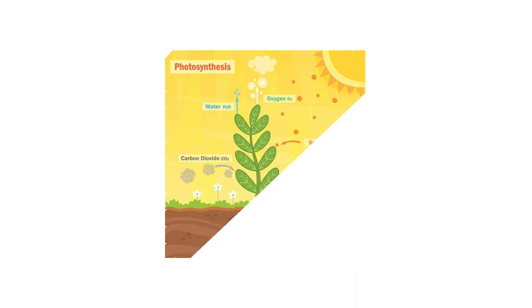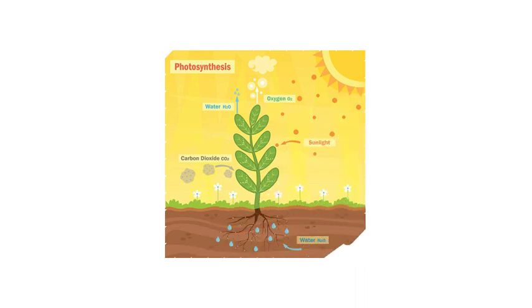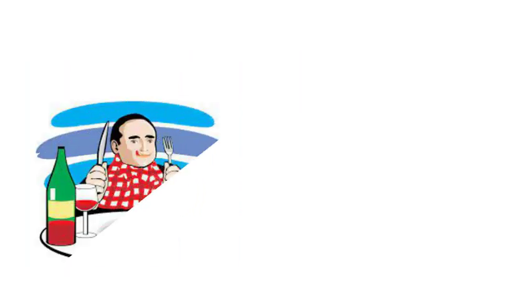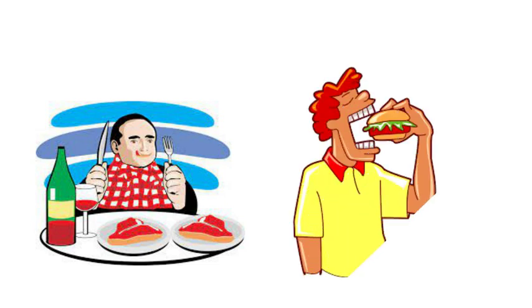Plants use light, air, and water to make their own food through a process called photosynthesis. Animals cannot make their own food — they eat plants or other animals.